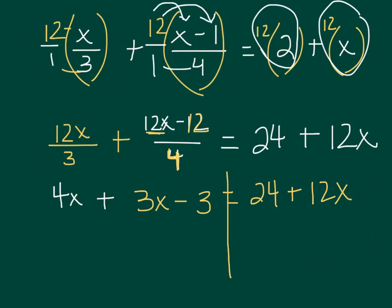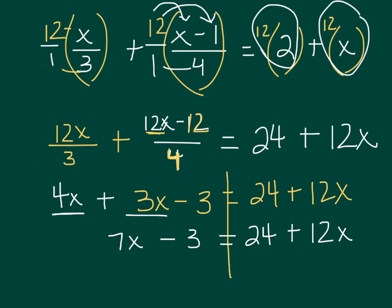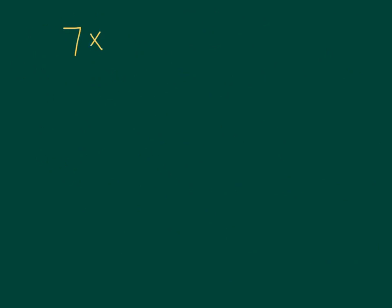Now I can go ahead and draw my line down through my equal sign and combine like terms. Here we have 4x and 3x, which is 7x, minus 3 equals, over here, 24 plus 12x. Now this is just a normal equation like we've solved many times. I'm going to copy this down and go to the next slide to have a bit more room. So we have: 7x minus 3 equals 24 plus 12x.